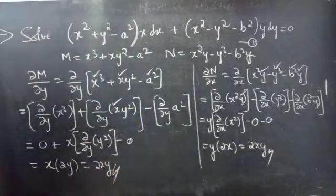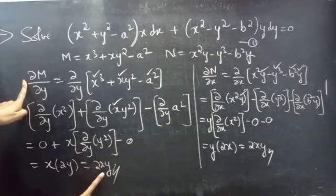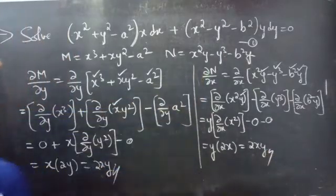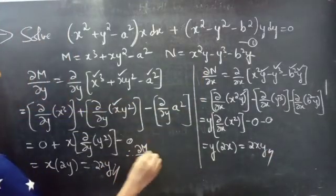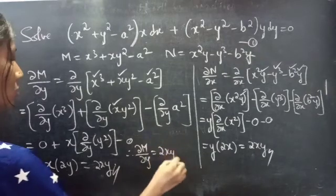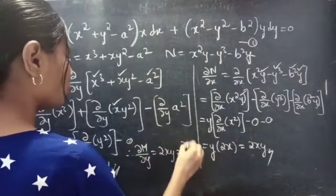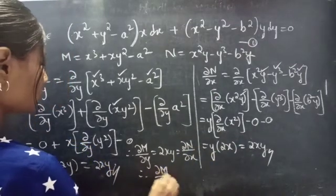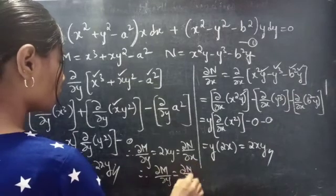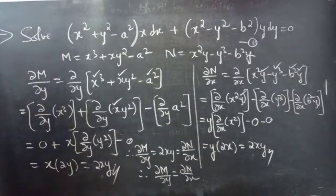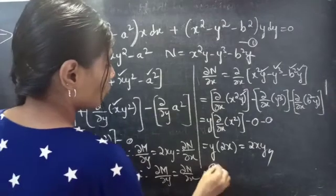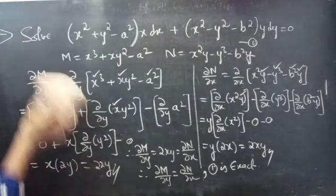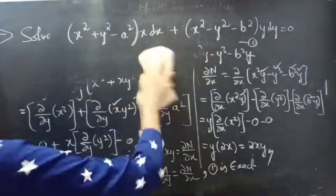So it is clear that ∂M/∂y = ∂N/∂x. Therefore, ∂M/∂y = 2xy = ∂N/∂x. From this, we can say that equation (1) is exact.